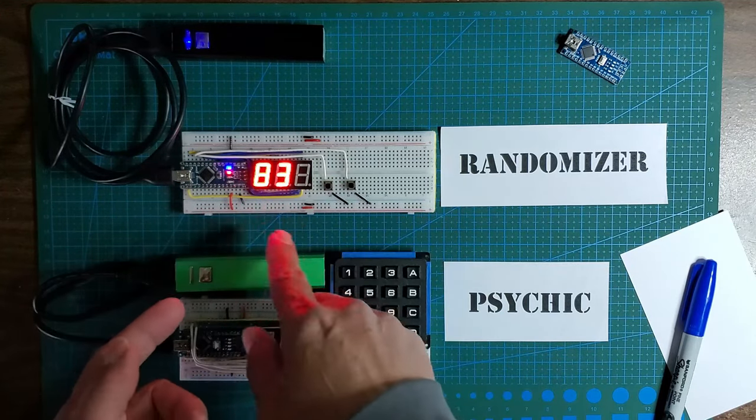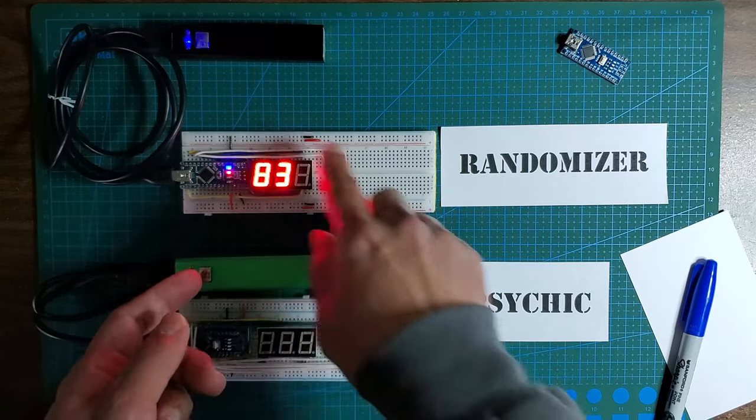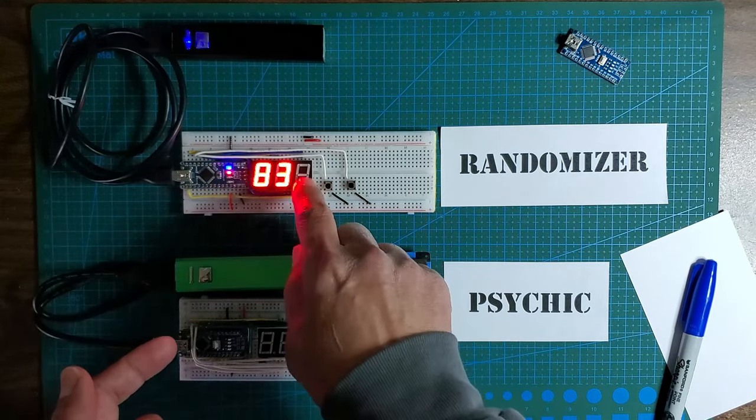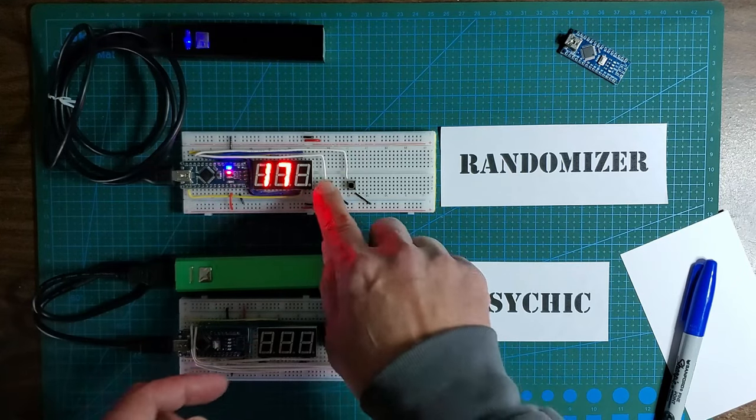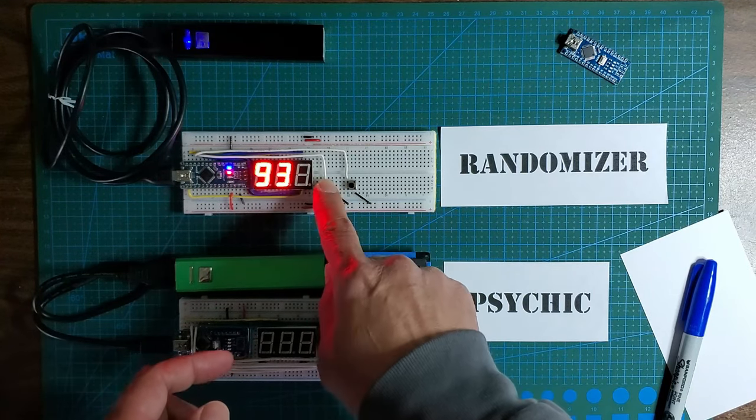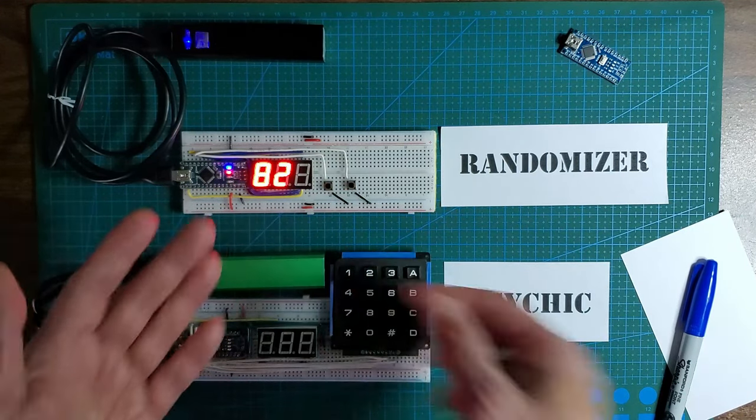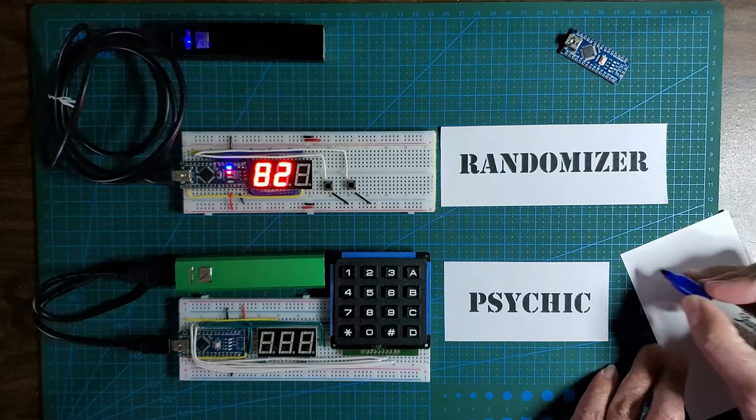I only need two digits but I don't have a two-digit seven segment display, so I use a three-digit and didn't even bother wiring the third one. Every time you press this left button, it picks a random number. Let's say we like this number, so I'm going to write that down. This is the number we pick.